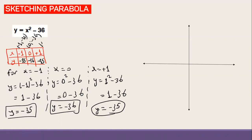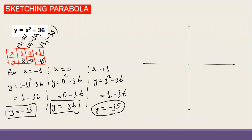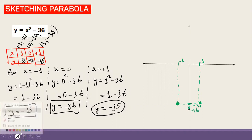The third point for x = 1: y = 1² - 36 = -35, so the point is (1, -35). I place all three on the coordinate system: (-1, -35) about here, (0, -36) at the bottom, and (1, -35) about there. Then I join them by a curve.